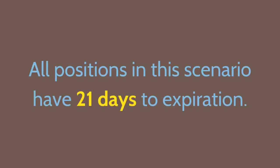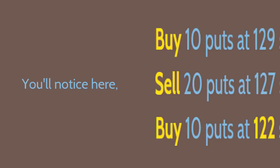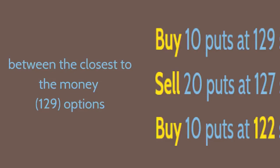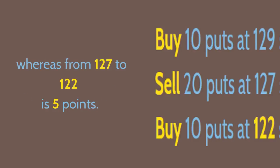All positions in this scenario have 21 days to expiration. We buy 10 puts at the $129 strike, sell 20 puts at the $127 strike, and buy 10 puts at the $122 strike. You'll notice that the difference in strike prices between the closest to the money — the $129 options and the next strike price down at $127 — is only 2 points, whereas from $127 to $122 is 5 points.